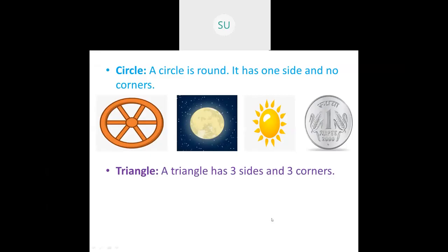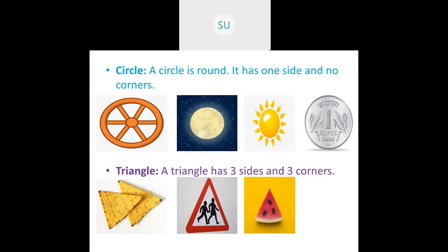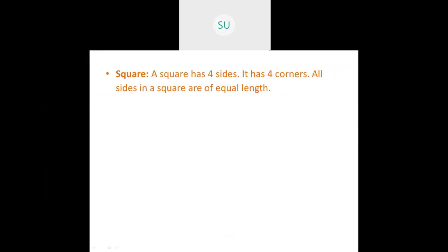Next we saw what's a triangle. A triangle is a shape which has three sides and three corners. So a triangle has one side, two and three — these are the three sides, and these are the three corners. Examples of triangles include chips, traffic signs, a watermelon slice when cut, and pizza.